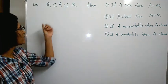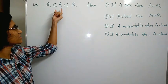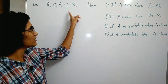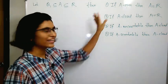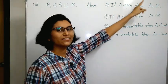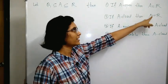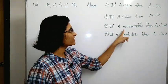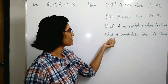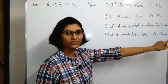We are given a subset A of ℝ such that Q is a subset of A, which is a subset of ℝ, the set of all real numbers. There are four options: first, if A is open then A equals ℝ; second, if A is closed then A equals ℝ; third, if A is uncountable then A is closed; and last, if A is countable then A is closed.